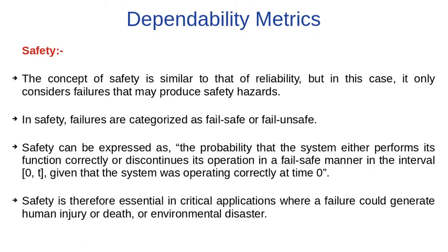For example, if somebody is driving a car and it meets an accident, then we will see if this is actually a failure — a human failure, a car failure, or a brake failure. Safety can be expressed as the probability that the system either performs its function correctly or discontinues its operation in a fail-safe manner in the interval between 0 and T, given that the system was operating correctly at time 0. Safety is therefore essential in critical applications where failure could generate human injury, death, or environmental disaster.